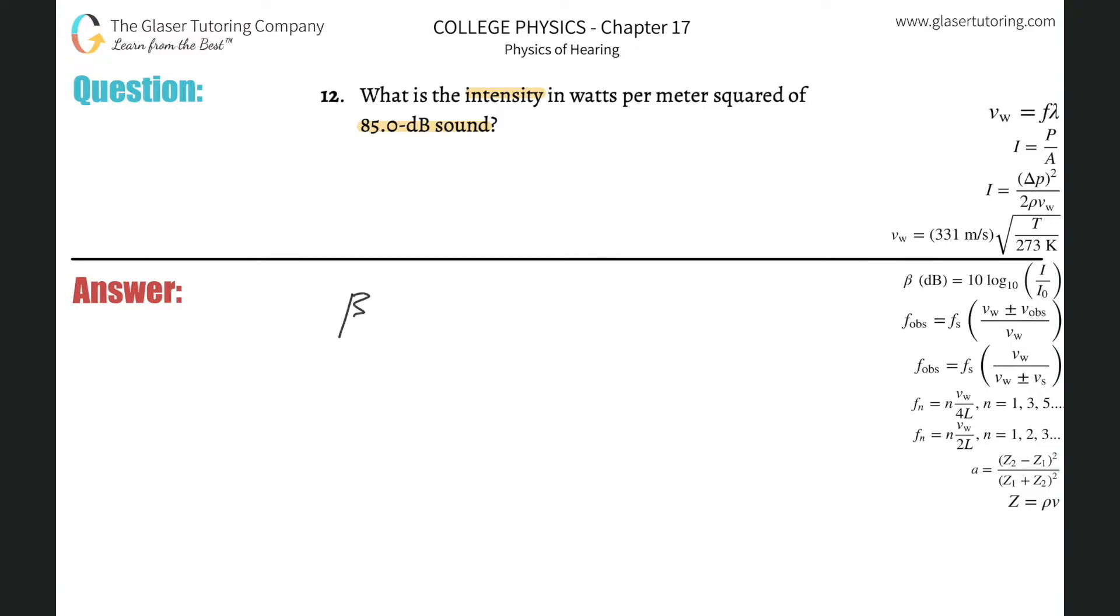It tells us that beta, which by the way is measured in decibels, is going to be equal to 10 multiplied by the log base 10 of the intensity that we're hearing, or the intensity being produced by a certain sound. So I'll write I sub s divided by the threshold of hearing I sub o.